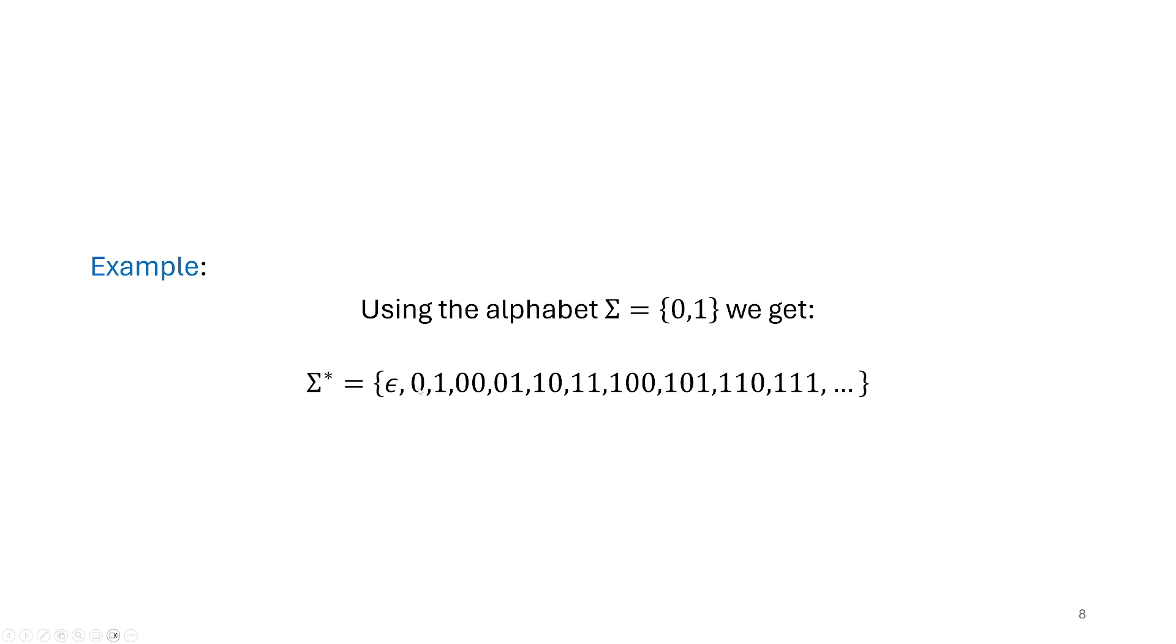But then I start listing the strings of length one. In my simplified alphabet binary alphabet, we only have zero and one, and then zero, zero, zero, one, one, zero, and one, one are the four strings of length two. And then there will be a bunch of strings of length three. As we keep growing, we will keep getting longer and longer strings.